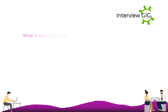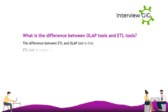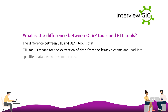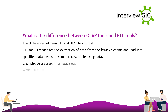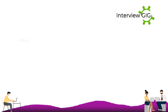The difference between ETL tools and OLAP tools is that ETL tools are meant for the extraction of data from legacy systems and loading it into a specified database with some process of cleansing — examples include DataStage and Informatica. OLAP tools are meant for reporting purposes and present data in a multi-dimensional model — examples include Business Objects and Cognos.